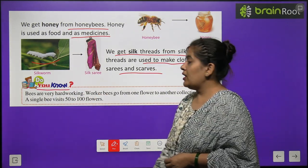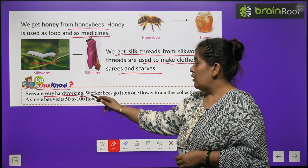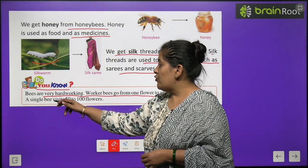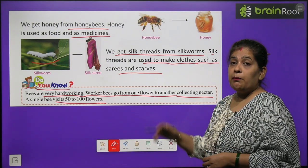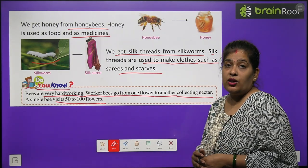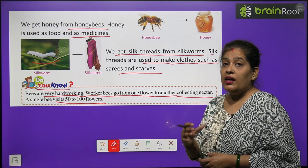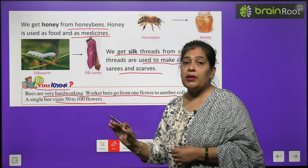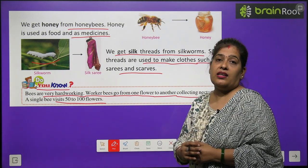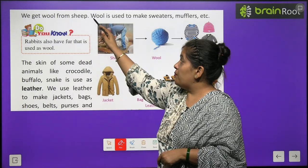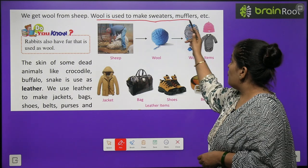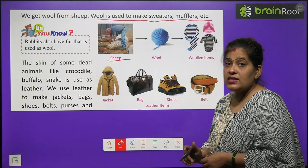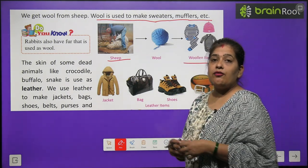Do you know? Kya aap jante hai? Bees are very hardworking. Worker bees go from one flower to another collecting nectar. A single bee visits fifty to hundred flowers. We get wool from sheep. Wool is used to make sweaters, mufflers, etc. Hame oon milti hai bheer se. Aur oon se kya banta hai? Woolen items jaise sweater, scarf aur jacket.